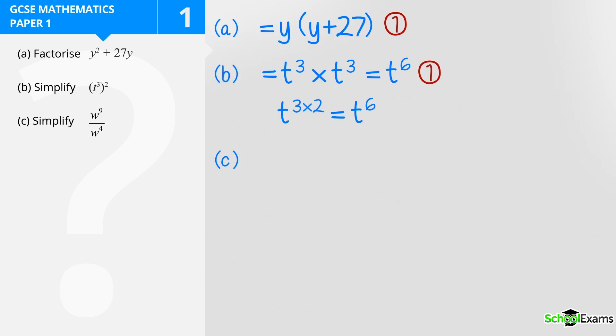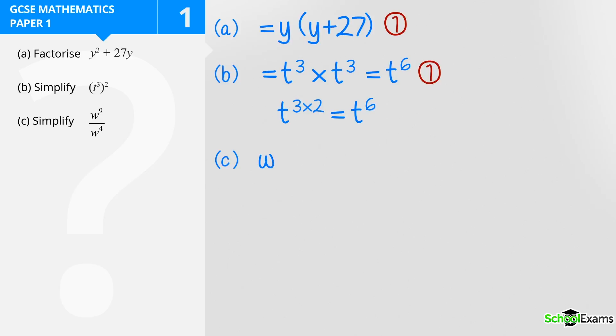Part C, simplify w⁹ ÷ w⁴. Well when we're multiplying with indices we add these indices. When we're dividing we subtract these indices. So my answer is going to be w raised to the power of nine take away four, which is going to be w⁵. And there was one mark for that answer as well.